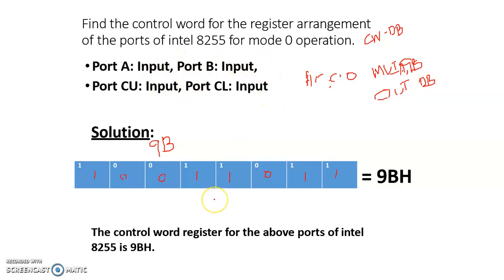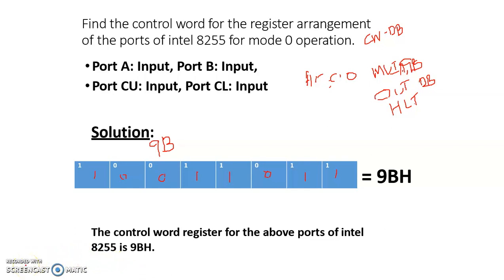So the programming is over — you can end it with HLT. And here we end our discussion on Intel 8255. Now let's move on to Intel 8257.